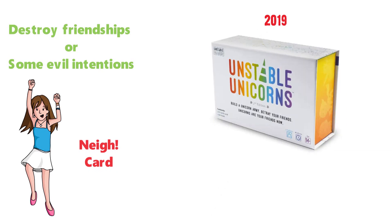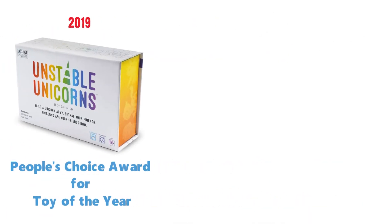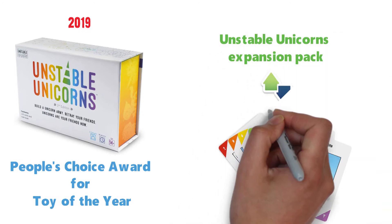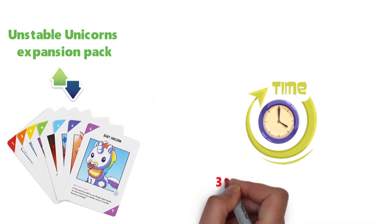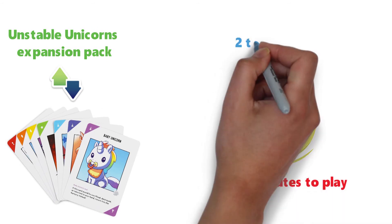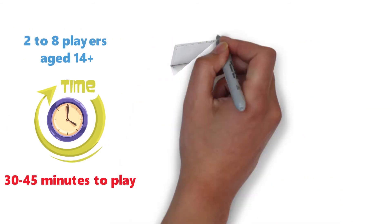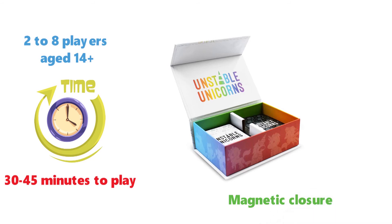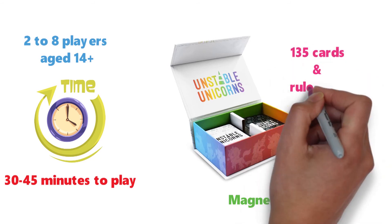In 2019, the game won the People's Choice Award for Toy of the Year. It is fully playable on its own or with any Unstable Unicorns expansion pack added to it. It takes an average of 30 to 45 minutes to play with 2 to 8 players aged 14 and up. The box features a magnetic closure to safely keep 135 cards and a rulebook.